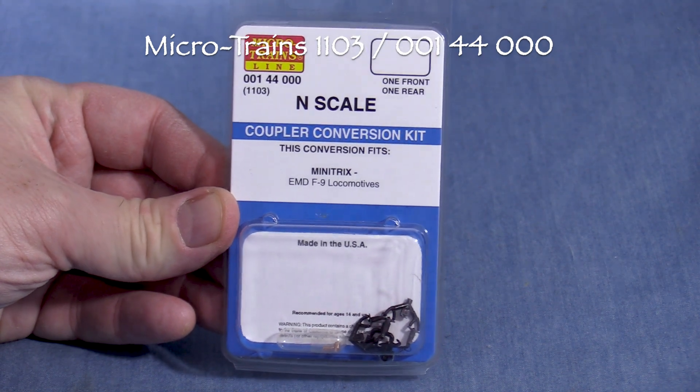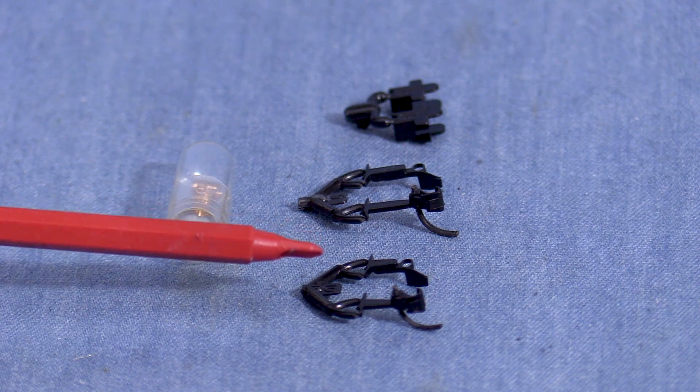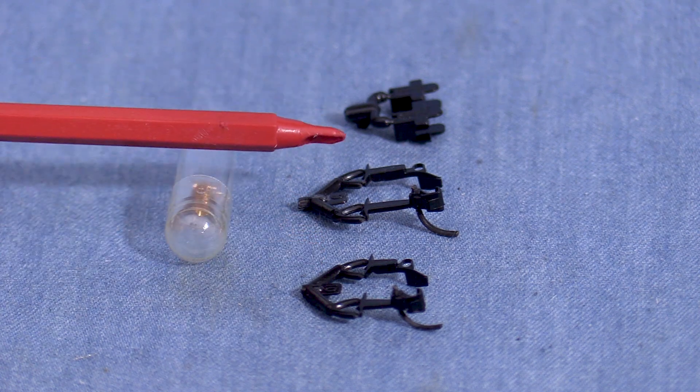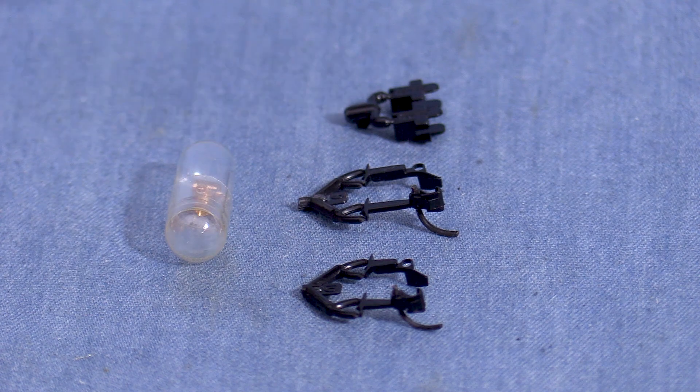The Microtrain's website recommends kit 1103 for the A unit. The kit has a short coupler, a long coupler, draft gear box adapters, and springs.